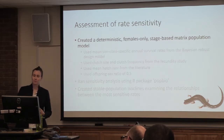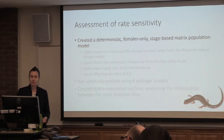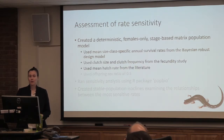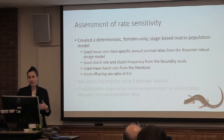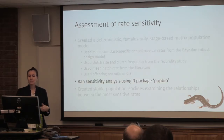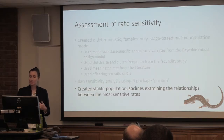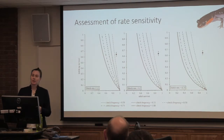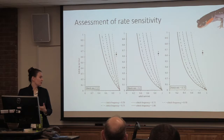Then we looked at rate sensitivity, creating a deterministic females-only stage-based matrix population model. We used mean size-class-specific annual survival rates from the Bayesian robust design model, clutch size and clutch frequency from the fecundity study, mean hatch rate from the literature, and offspring sex ratio of 0.5. The most sensitive rates were very similar to the literature review: adult survival, hatchling survival, hatch rate, and clutch frequency — the same four most sensitive rates.